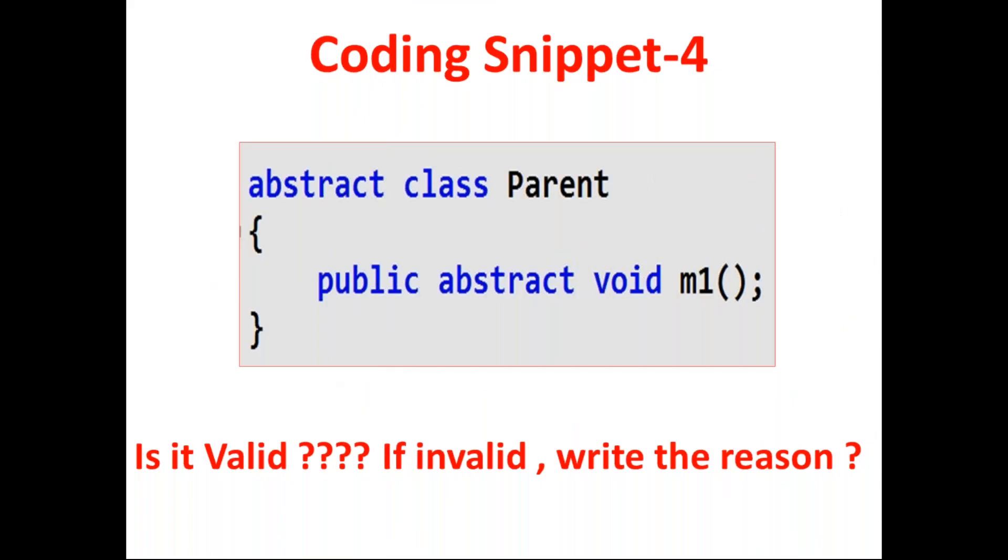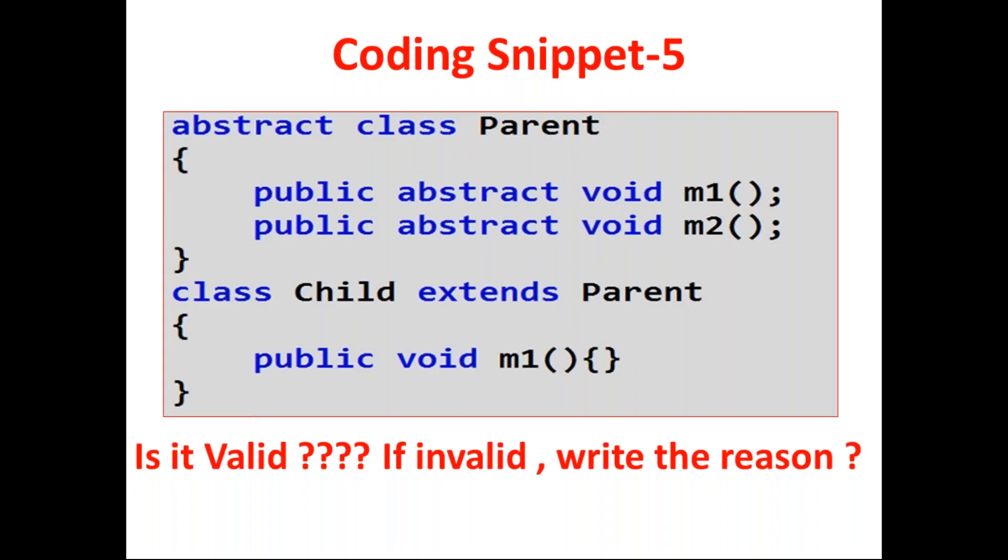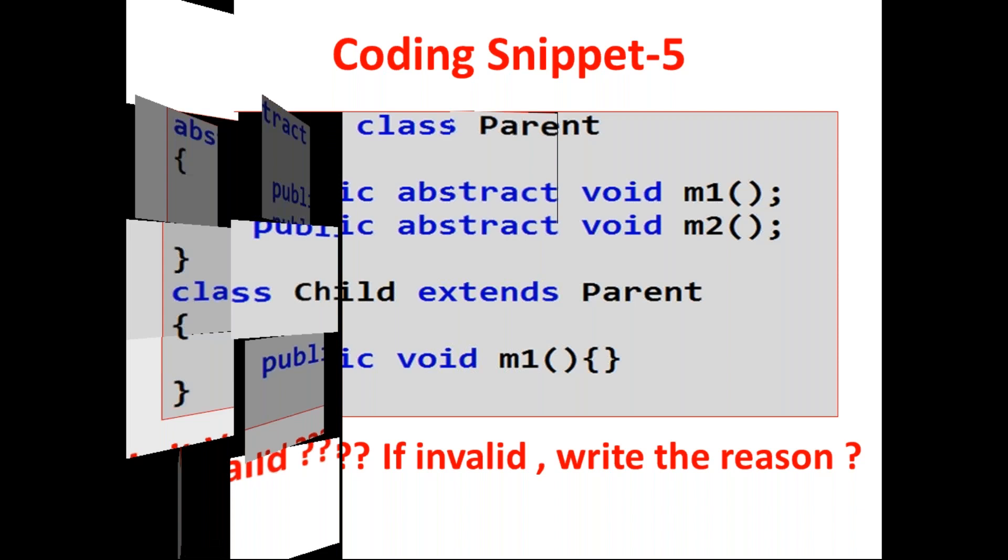Now the next thing, of course here our team added effects. Abstract class Parent, public abstract void m1. So now is it valid or not? I hope, I don't want to tell the answer. Now look once. This is abstract class Parent. This parent class contains an abstract method. Can you please tell, is this coding snippet valid or not?